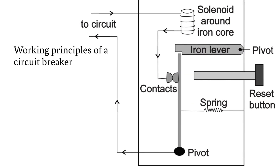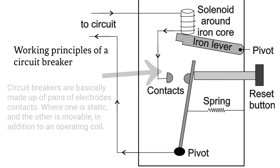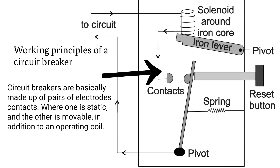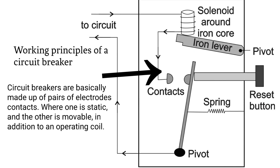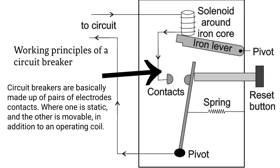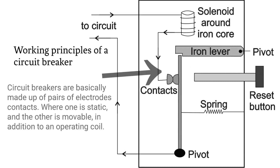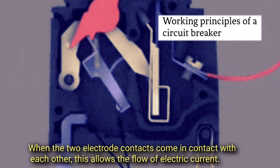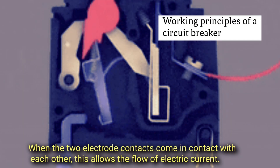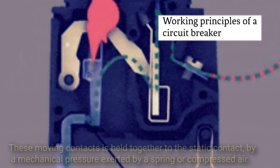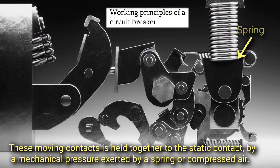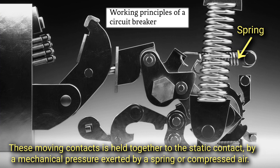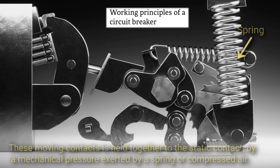Working principle of the circuit breaker. Circuit breakers are basically made up of pairs of electrode contacts, where one is static and the other is movable, in addition to an operating coil. When the two electrode contacts come in contact with each other, this allows the flow of electric current. This moving contact is held together to the static contact by a mechanical pressure exerted by a spring or compressed air.